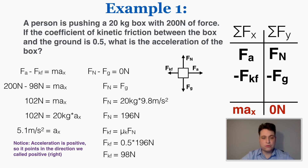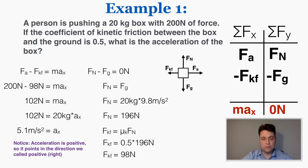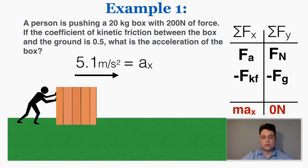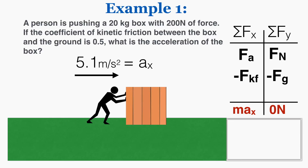That's how you use Newton's second law to solve a problem for acceleration. Because the acceleration is positive, it points in the direction we defined as positive. I called the applied force positive and friction negative, so the acceleration points in the same direction as the person's push.